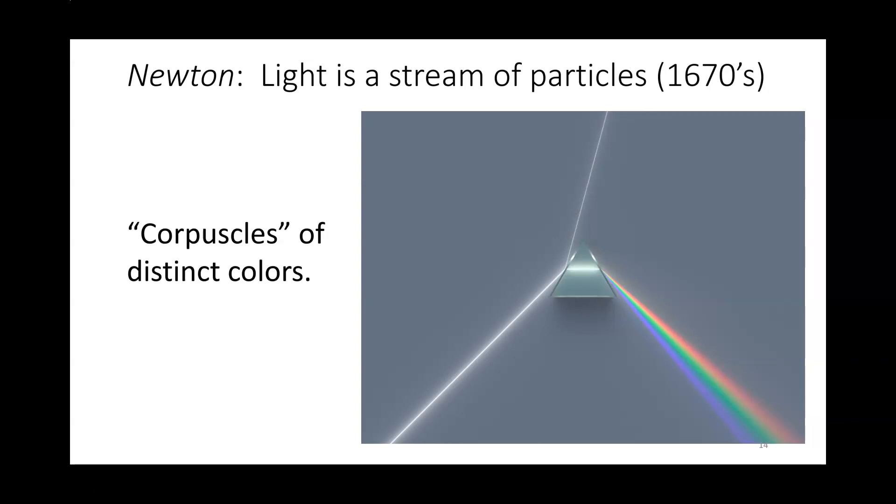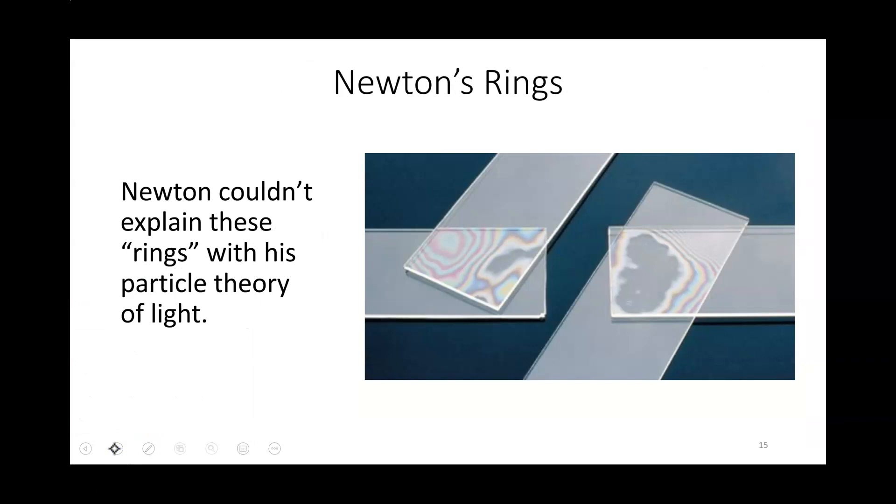However, even Newton had some phenomena he couldn't understand. Another phenomenon that you may be aware of is Newton's rings, named after Newton himself, where you have some white light shine off of a couple of microscope slides and you end up getting a pattern of varying colors that reflect off. He was unable to understand this.